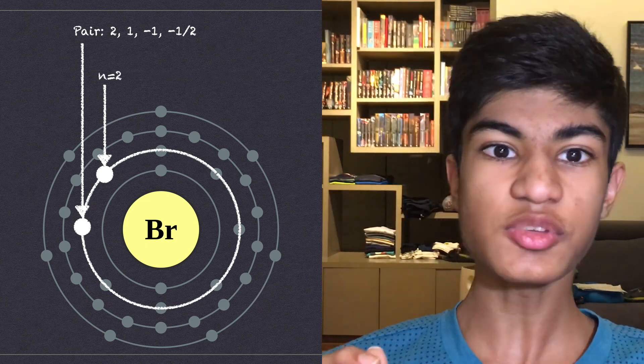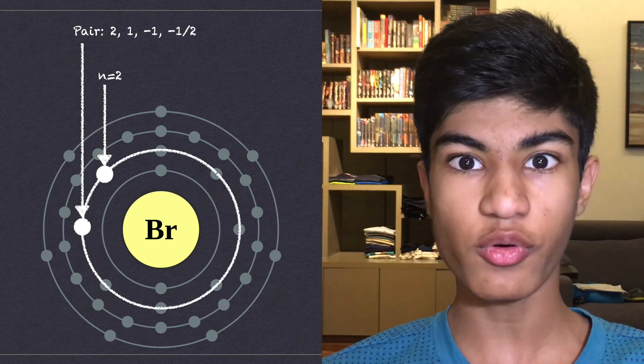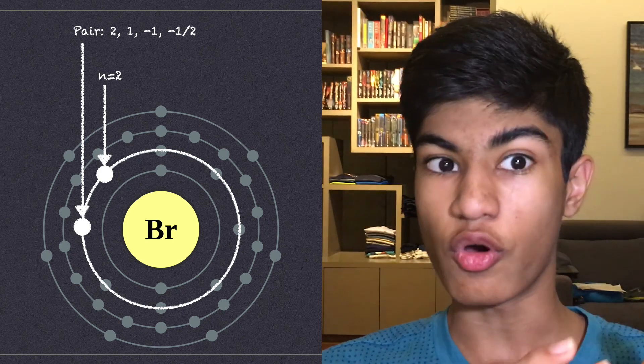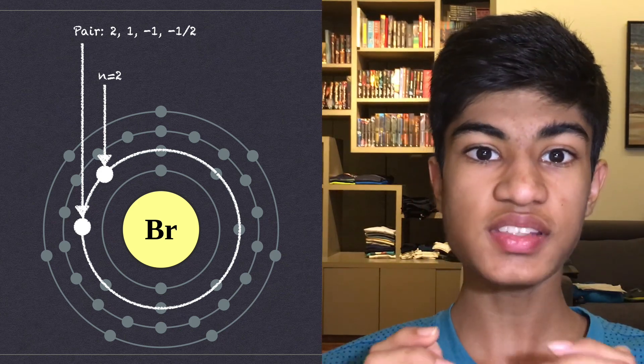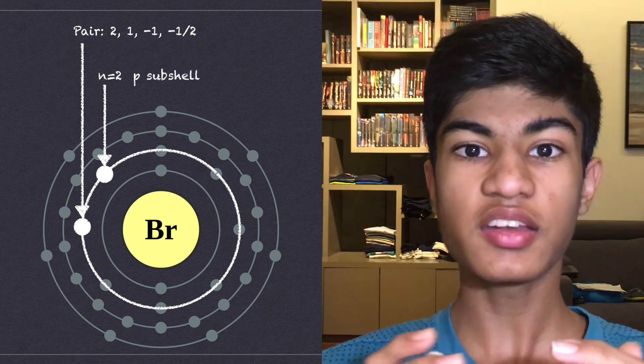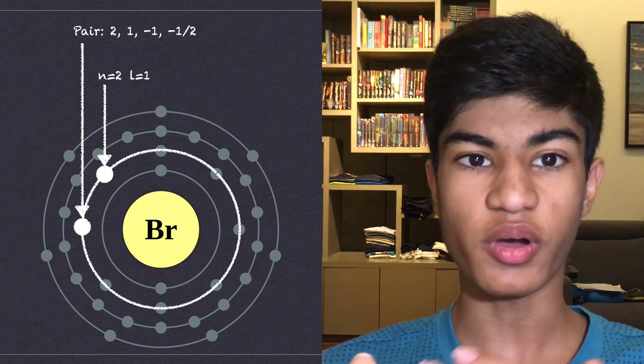Now L, its azimuthal quantum number can be between 0 and N-1. As N is 2, it's either 0 or 1, which means the electron is in either the S shell or the P shell. Since its pair is in the P shell, it too must be in the P with a value of 1.